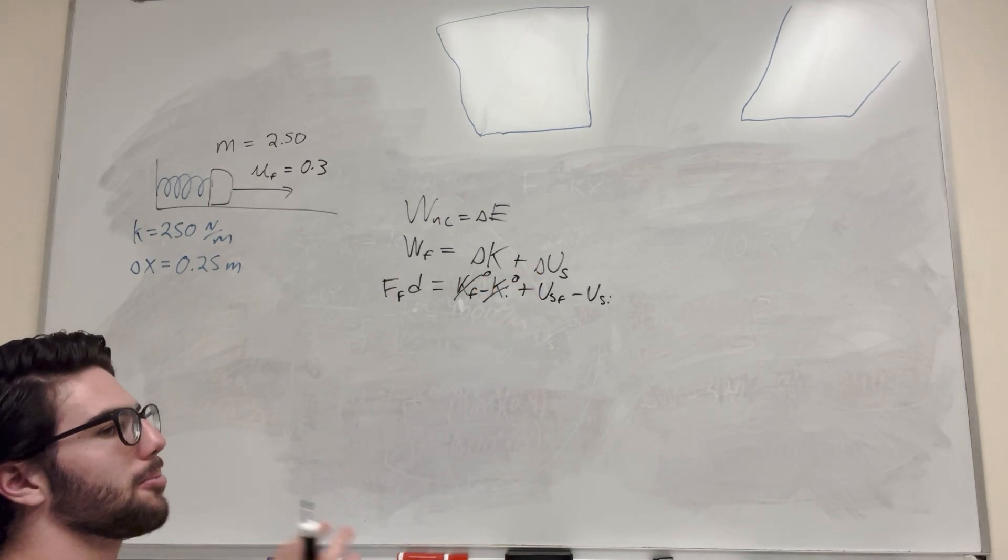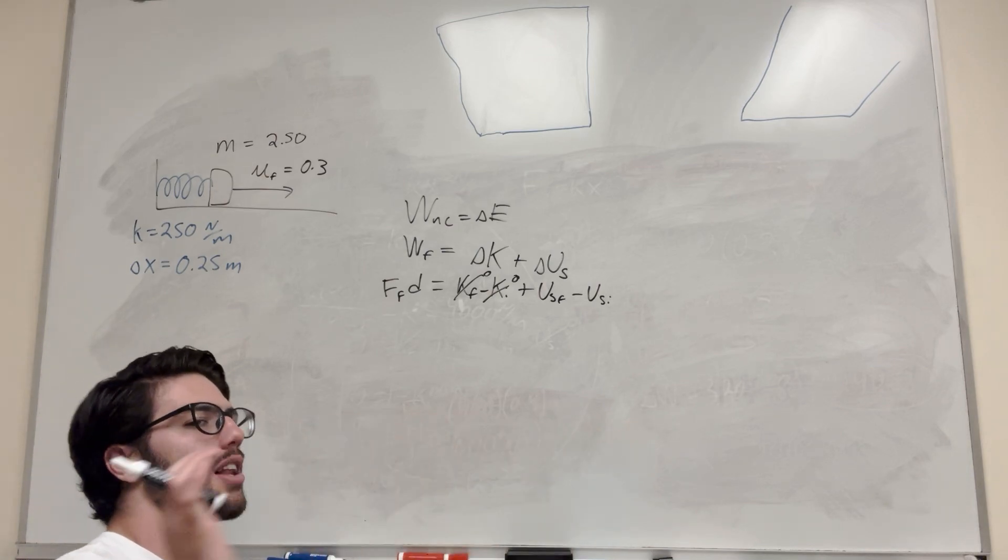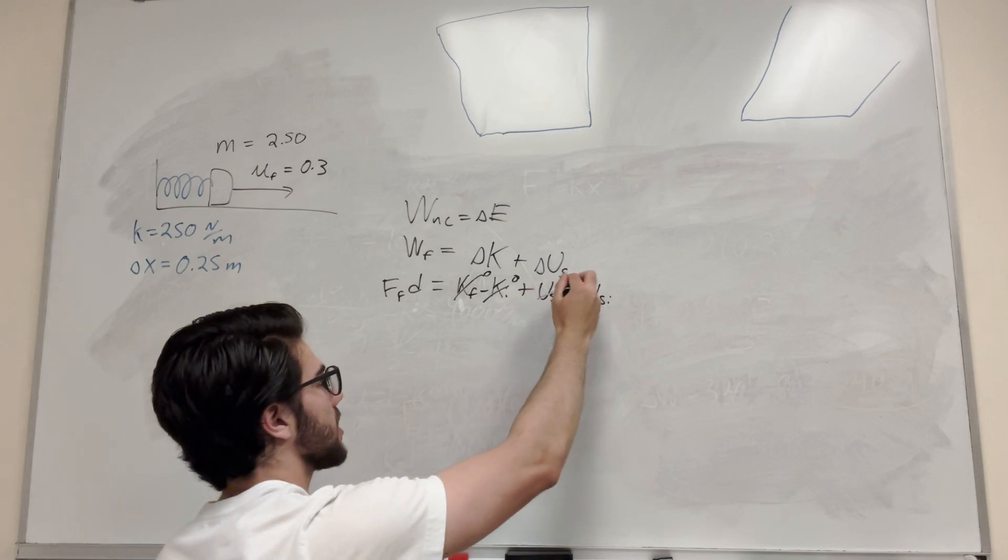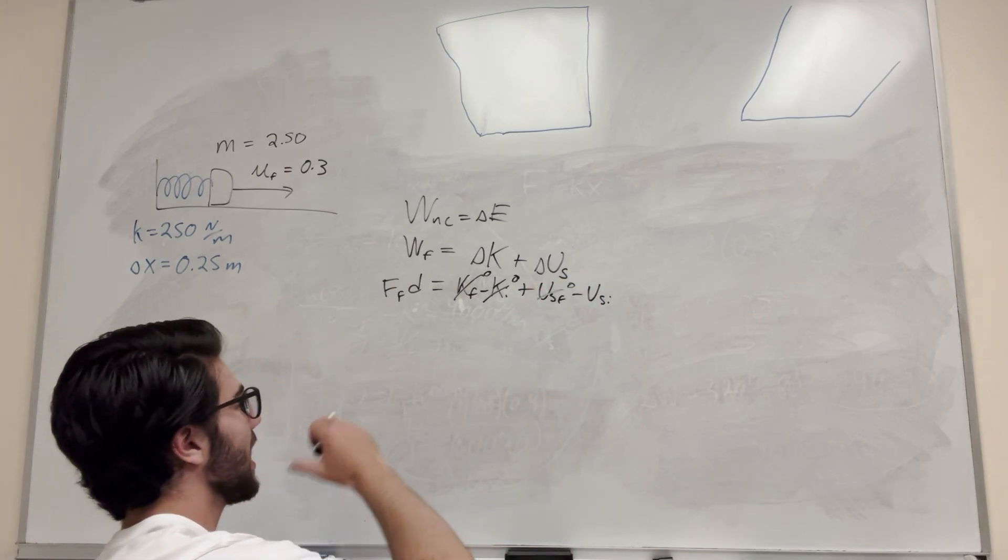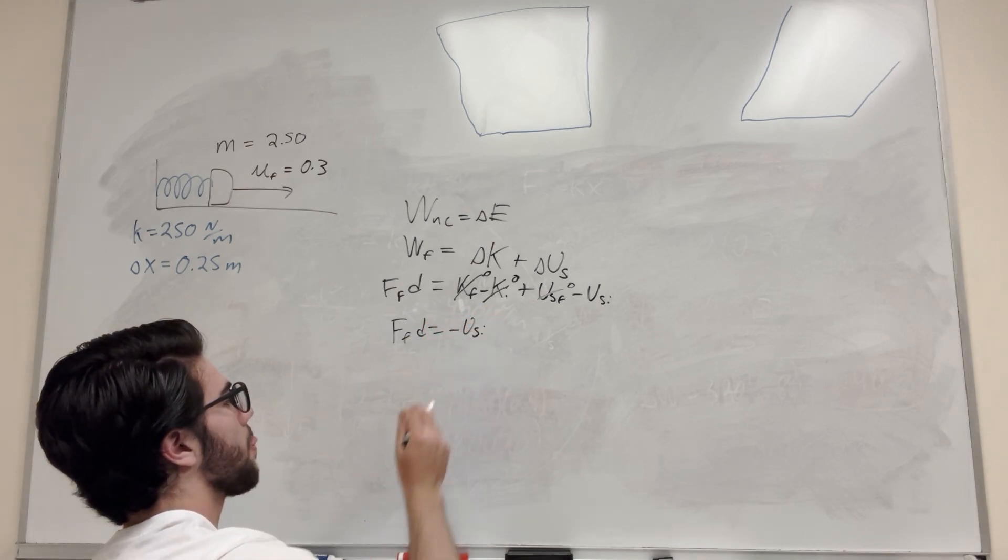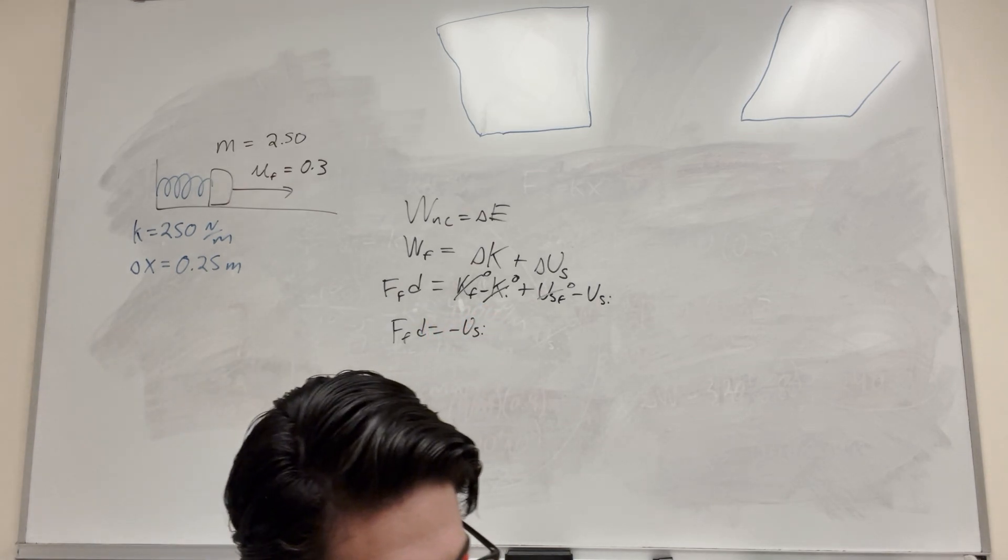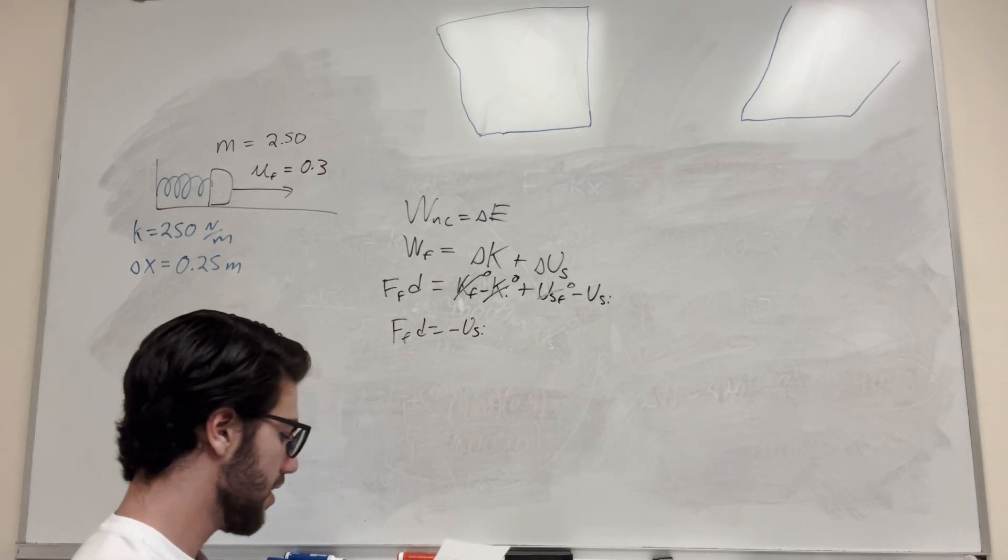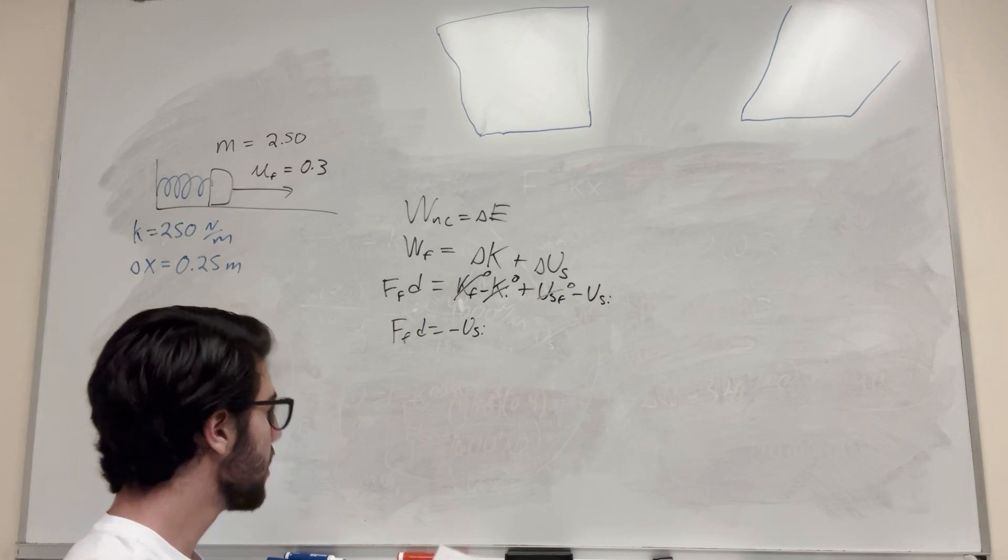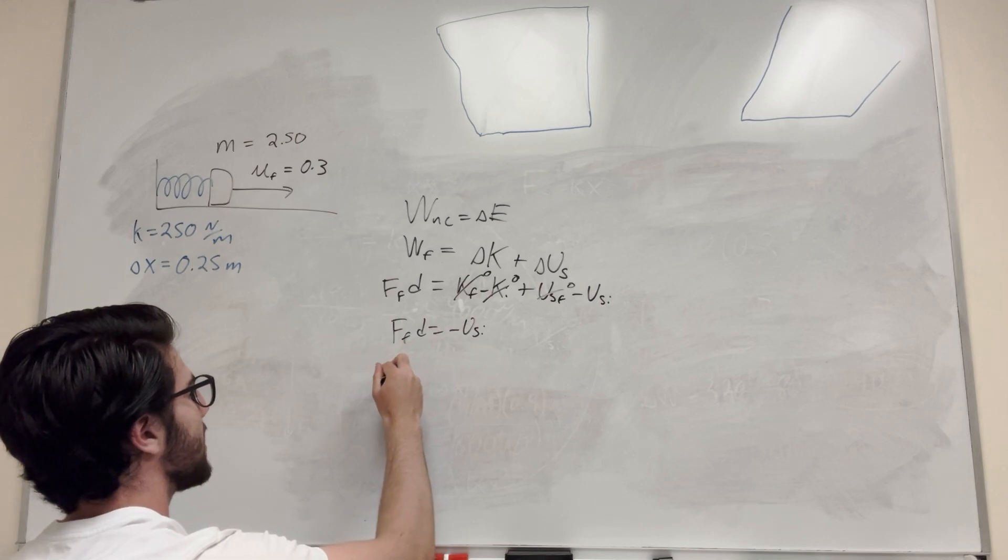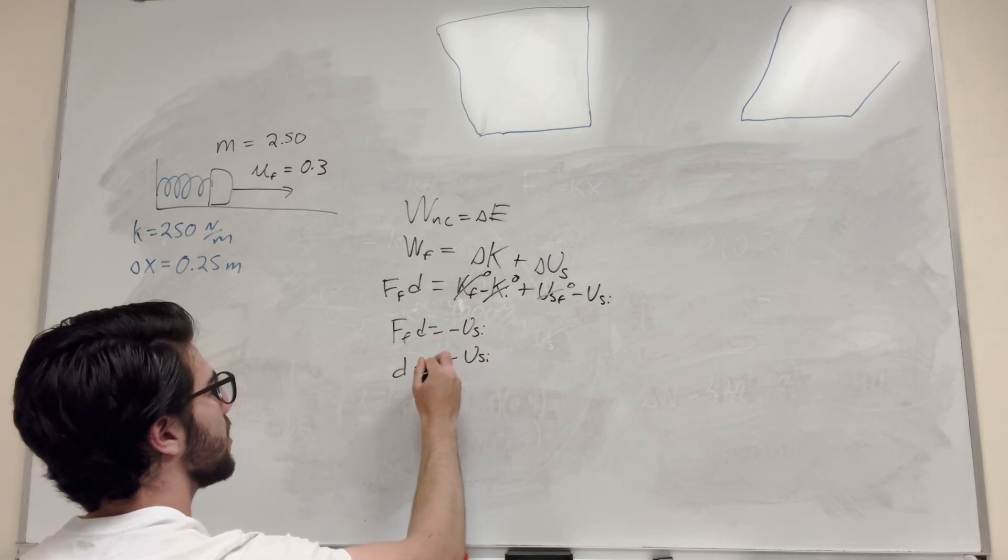So U spring final, well, basically we're pushing it against the spring at the beginning, and then we're gonna let it go, and the spring is just gonna not be useful at the end. So U spring final is also gonna drop. And what we actually end up with is just force of friction times distance is equal to negative U spring initial. So that's pretty handy. So what are we gonna do from here now? Okay, so we're trying to find distance. So we're gonna say distance is equal to U spring initial over F friction.